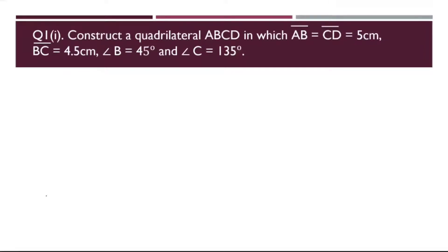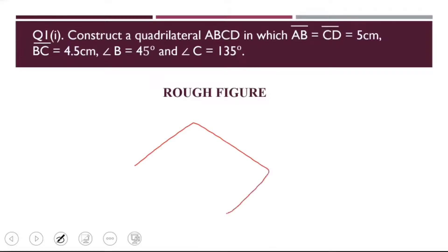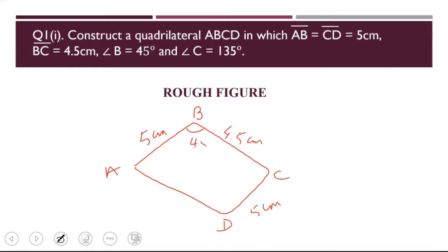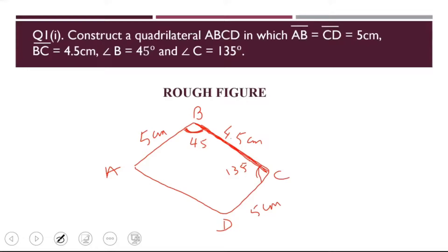Let us try to draw the rough figure first of all. I draw a quadrilateral ABCD. Now, what all is given to me? I have AB as 5 cm, CD as 5 cm, BC as 4.5 cm, angle B as 45° and angle C as 135°. I always draw the rough figure — you should understand the reason for this. When I draw the rough figure, I understand how I am going to make the construction. I can see that BC is given and the angles at the endpoints of BC are also given, so I will take BC as the base first.